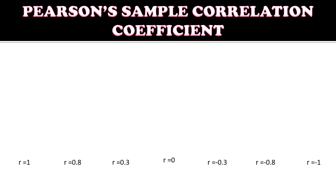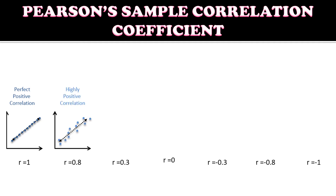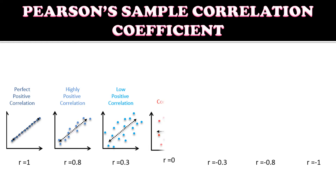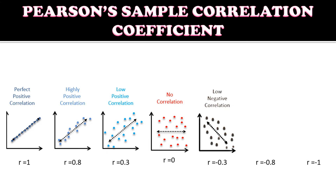From our previous lesson, we have the values of R and the scatterplot. For R equals 1, that is a perfect positive correlation. For R equals negative 0.8, it falls under highly negative correlation. For R equals 0.3, that's low positive correlation. For R equal to 0, that's no correlation. Then R equals negative 0.3 is low negative correlation, and R equals negative 0.8 is highly negative correlation.